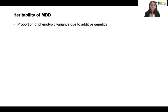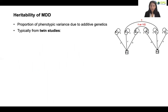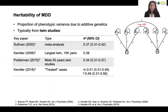Heritability is a key concept in genetics. It is the proportion of phenotypic variance attributable to additive genetics, and it is typically estimated from twin studies based on the expected genetic and environmental sharing within twin pairs. There is a long history of twin studies. A meta-analysis from two decades ago estimated heritability at 37%, and this is still the most cited MDD heritability estimate to date.